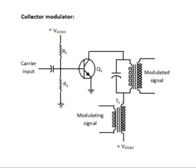The collector modulator is an example of a high level modulator. This circuit is called a collector modulator because the modulating signal is given to the collector. It consists of a radio frequency amplifier operated in class C mode, where the transistor conducts for less than half cycle of the input signal.